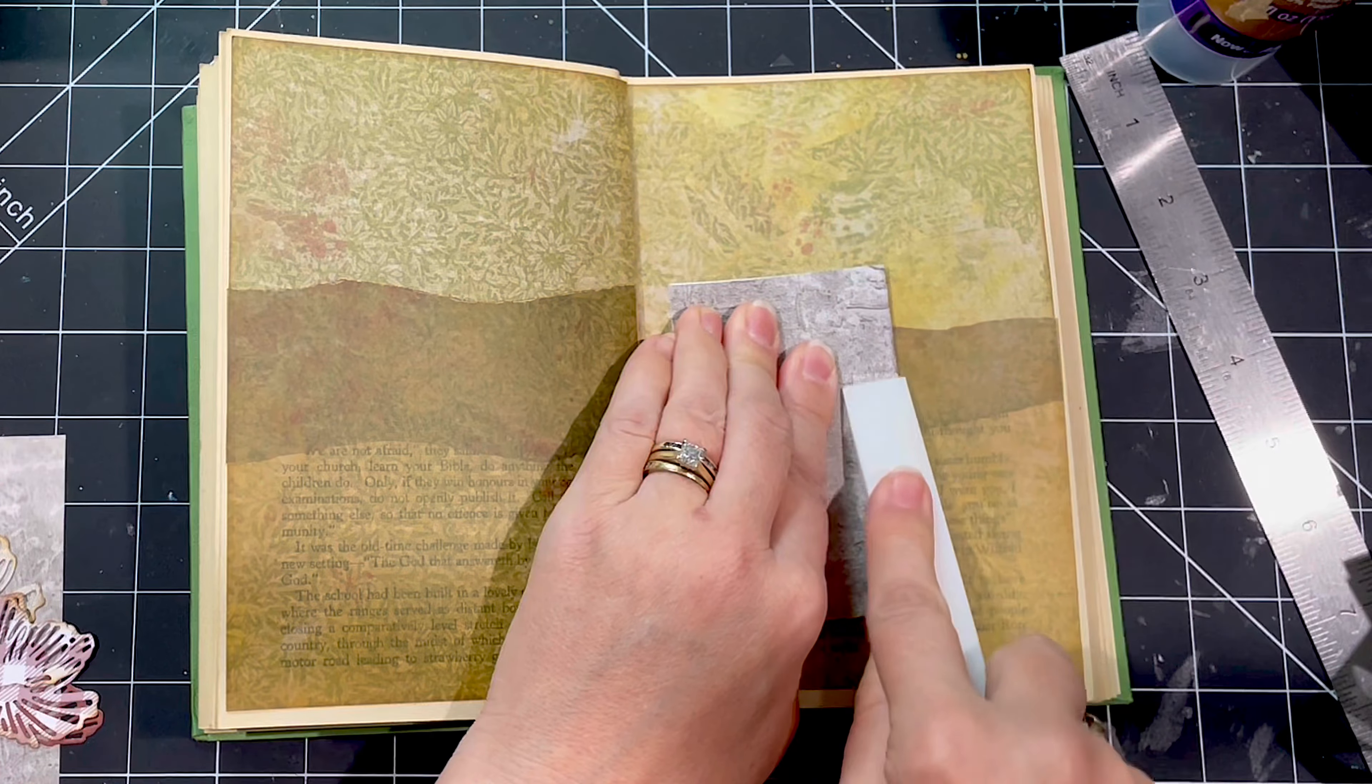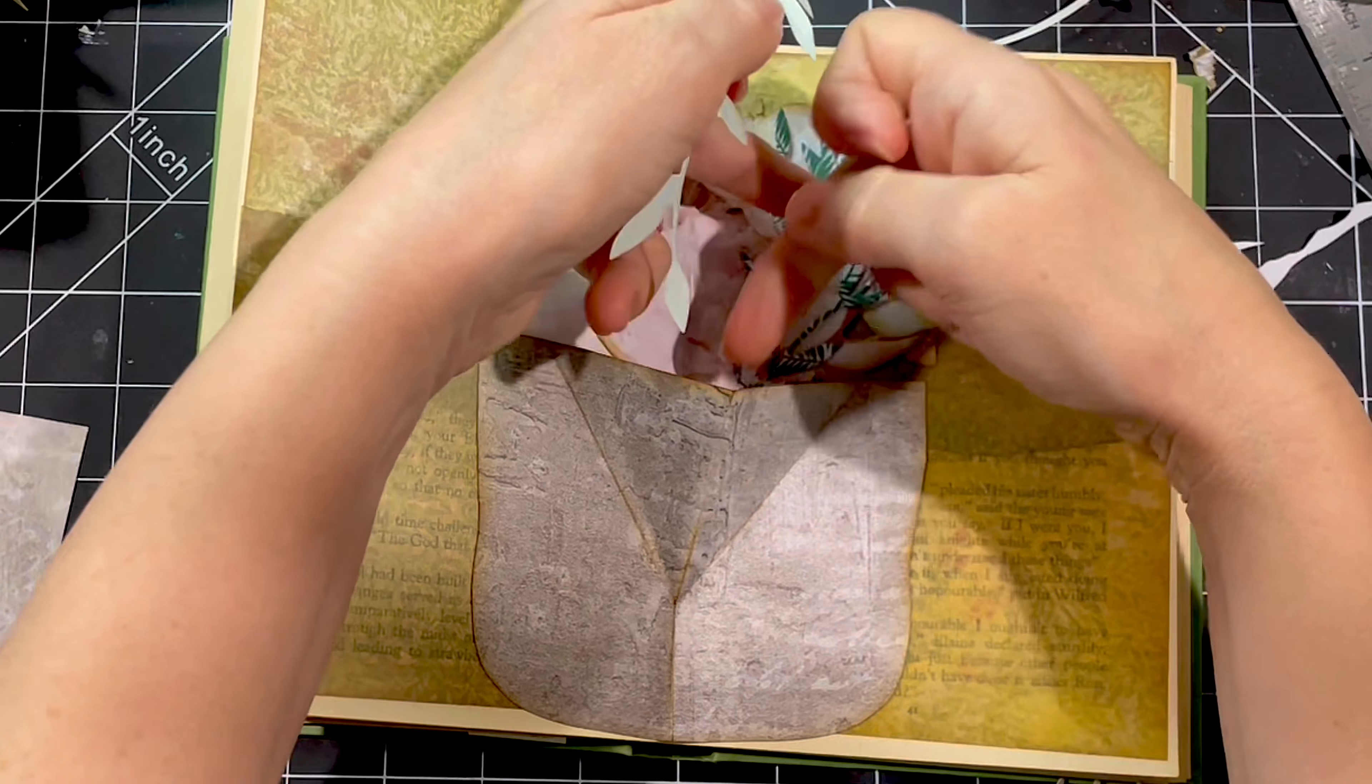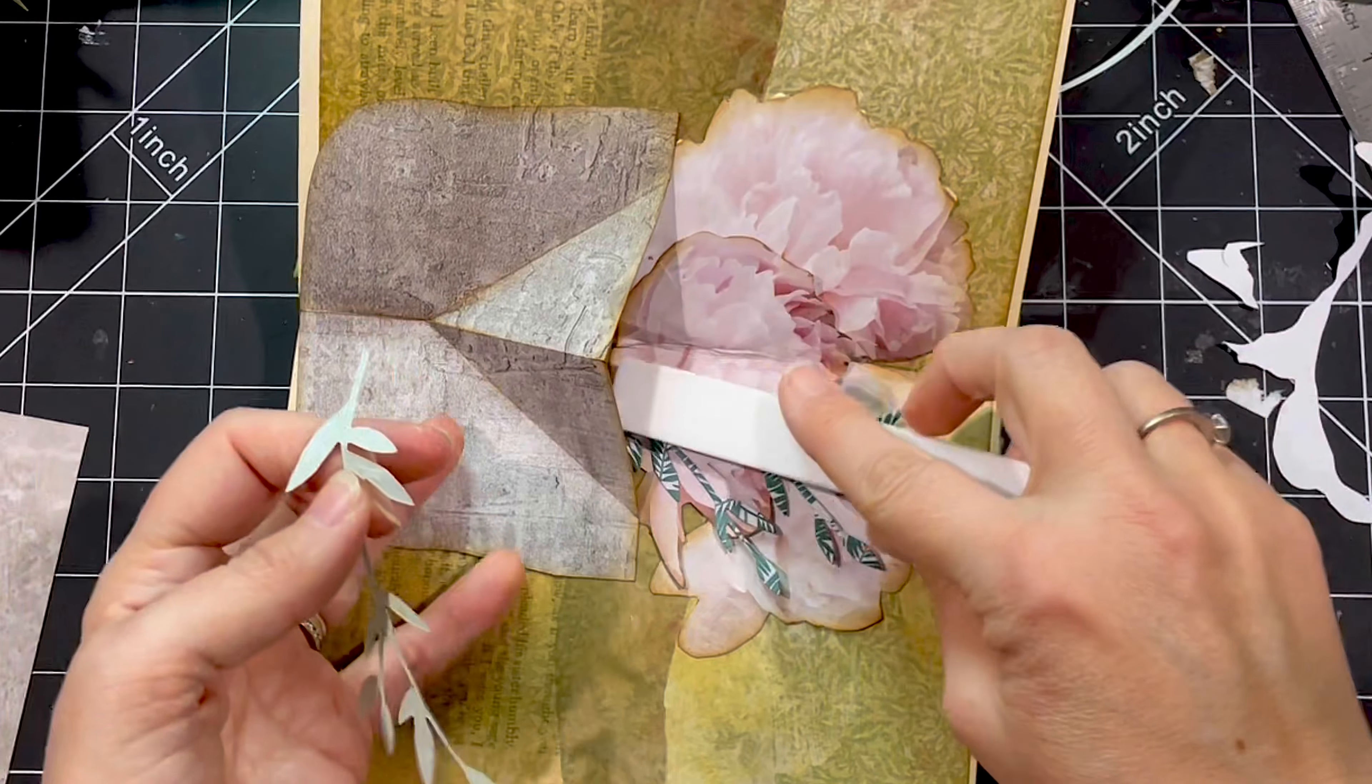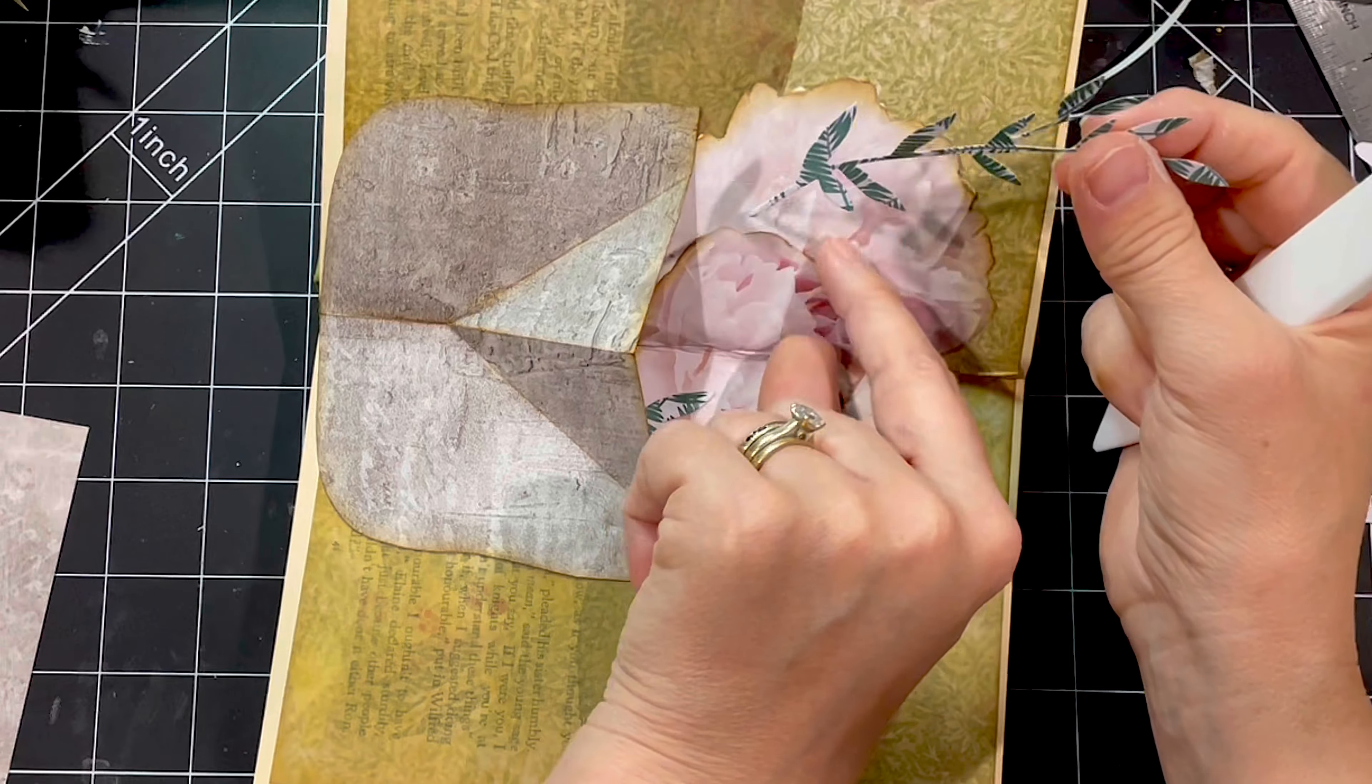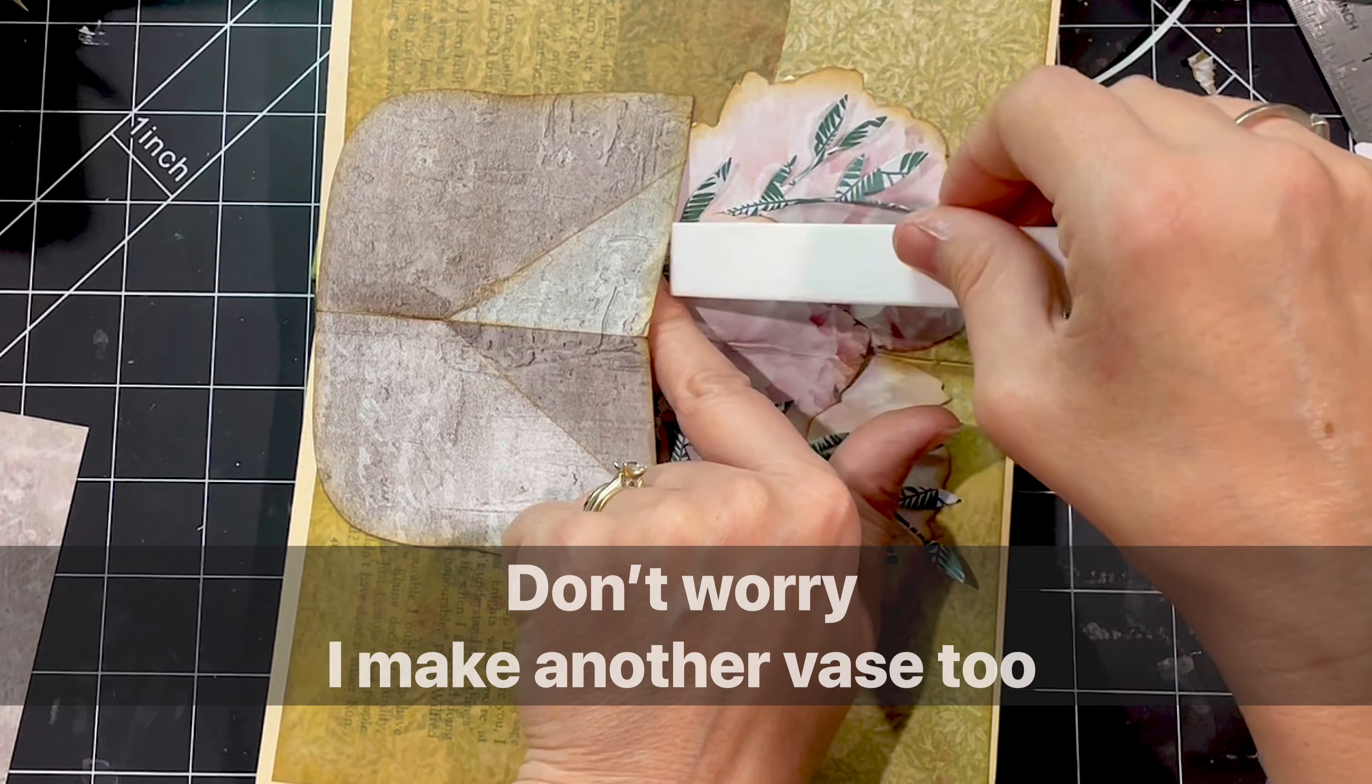But first I'll just show you all I do to put flowers into the vase is I put some on the background and I put some on the front. Now, admittedly, it's definitely easier if you don't stick your vase down first. And the reason you didn't see me making the vase is because kids interrupted and I forgot to turn my video back on.